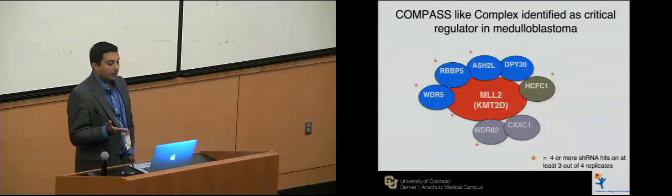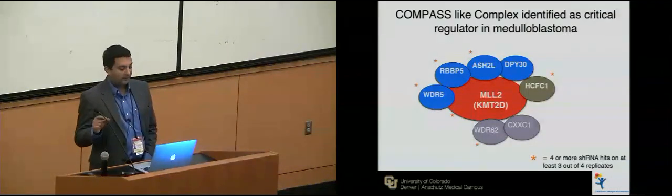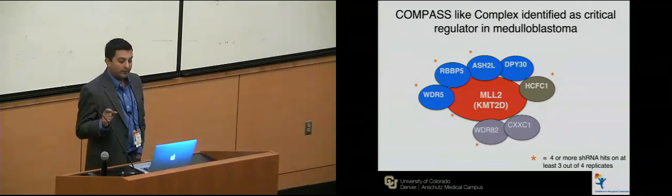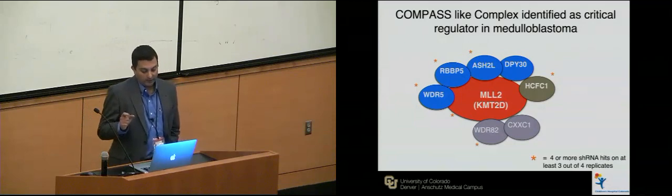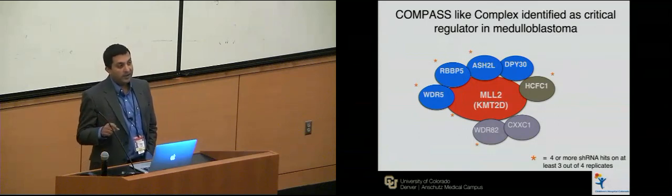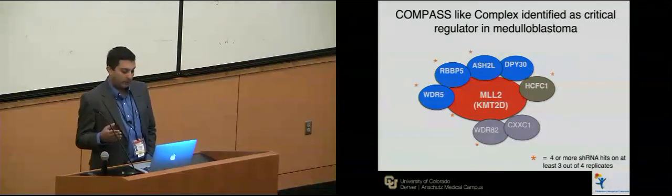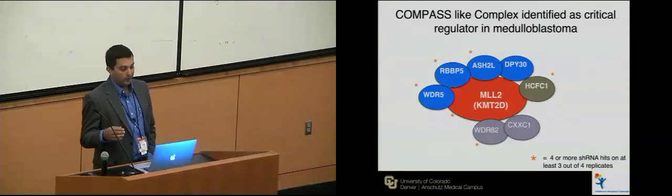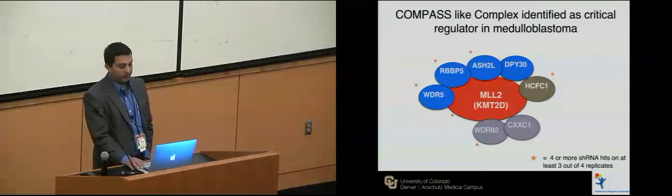The first one I want to talk about is the COMPASS-like complex. What was interesting was that almost every single component of this complex was a hit in our screen — not just one component, but almost all of them had four or more shRNAs hit, meeting our minimum threshold of at least two shRNAs in at least three out of four replicates. That was actually pretty surprising.